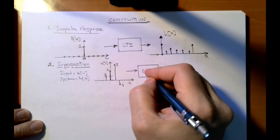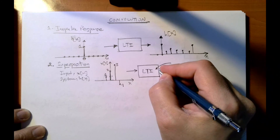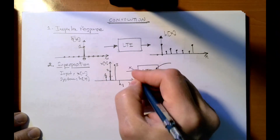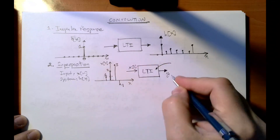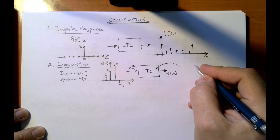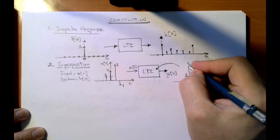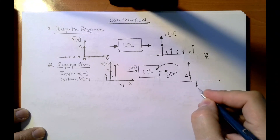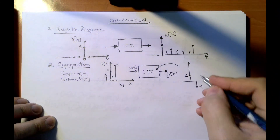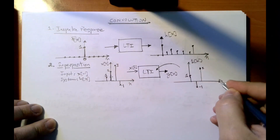This x[n] is going to go through an LTI — linear time-invariant — system, producing output y[n]. The LTI system has an impulse response h[n], which we draw as follows: at index zero it has a value of 1, at index one it has a value of minus one, and at index two it has a value of 2. So this is h[n].